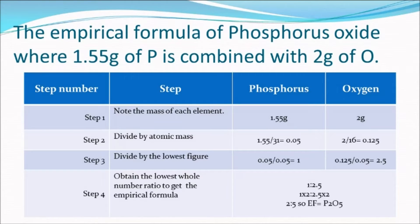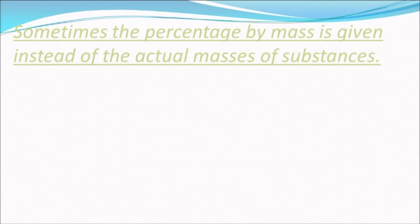Sometimes the masses of elements reacted are not in the data given. Instead, the percentage by mass is given. In order to tackle this problem, we have to understand first what is the percentage by mass or percentage composition by mass.